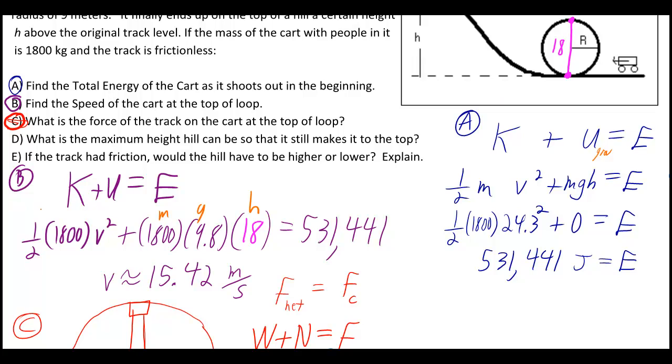And when you plug in for one half mv squared, well we know m, but we don't know v, that's what they're asking us for. However, we do know E this time, we just figured it out in part A. So you plug that in over there. And when you run through the algebra, you end up getting approximately 15.42 meters per second.